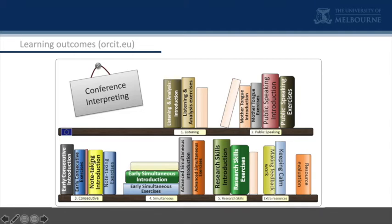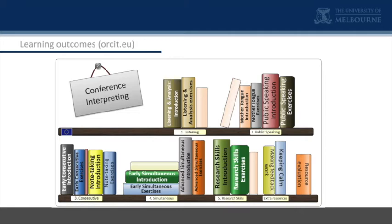That's a fairly traditional structure for training conference interpreters. As I mentioned previously, a sequencing problem is the order of consecutive and simultaneous. I had a student who wanted to test whether one could reverse that order — whether simultaneous would actually be more pedagogically useful if done first — but it's been impossible to test. So this bit is sort of imposed by tradition. But I'm very interested in these two modules — listening and public speaking — which should be of interest not just in all translator training, but also surely in all language education.